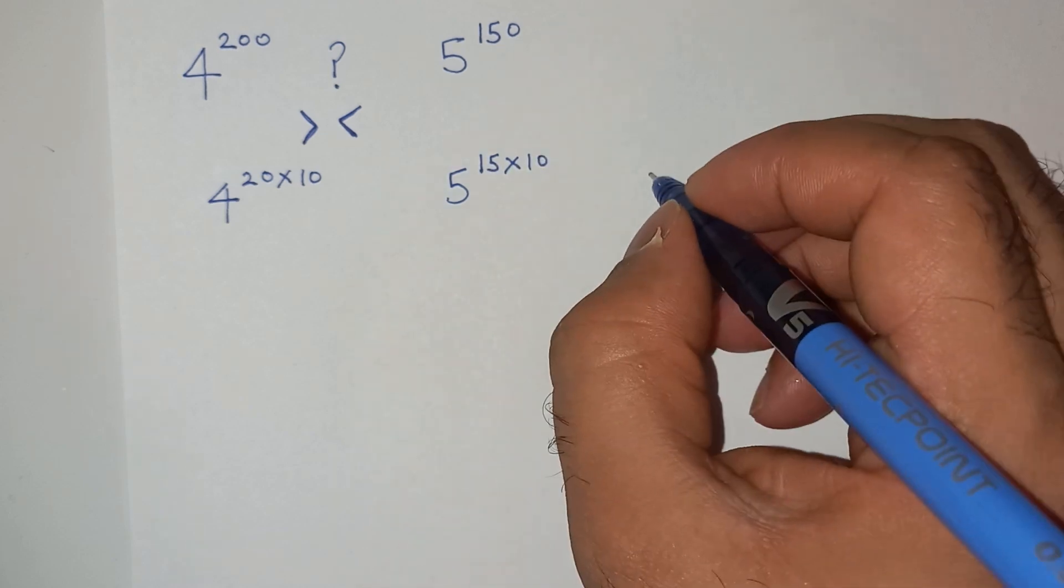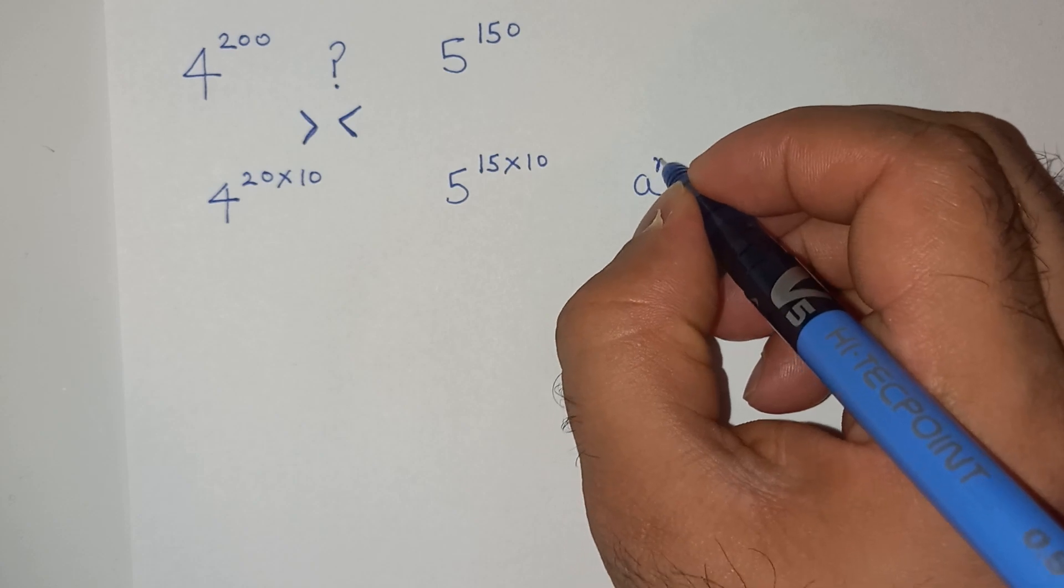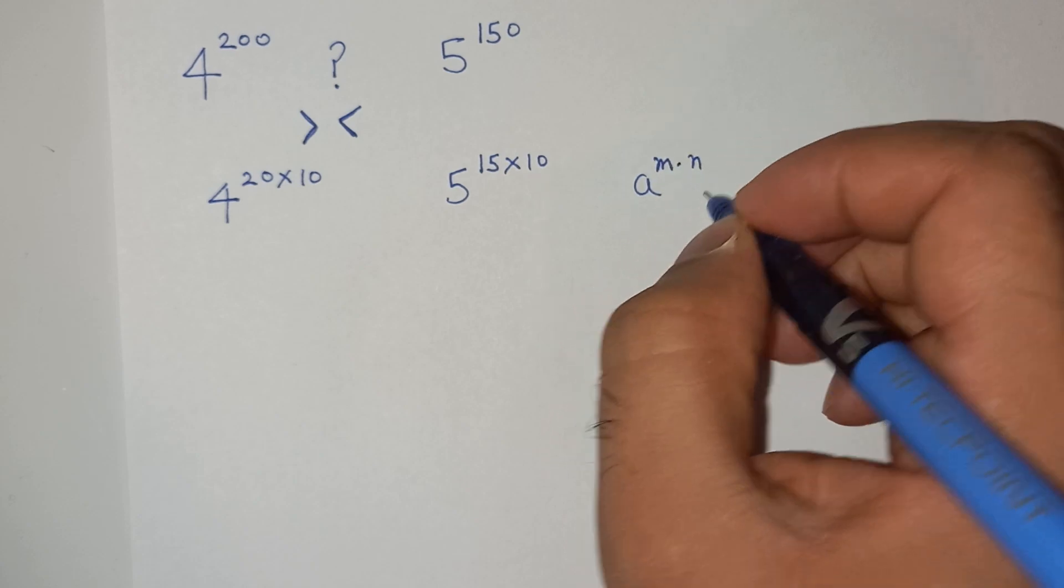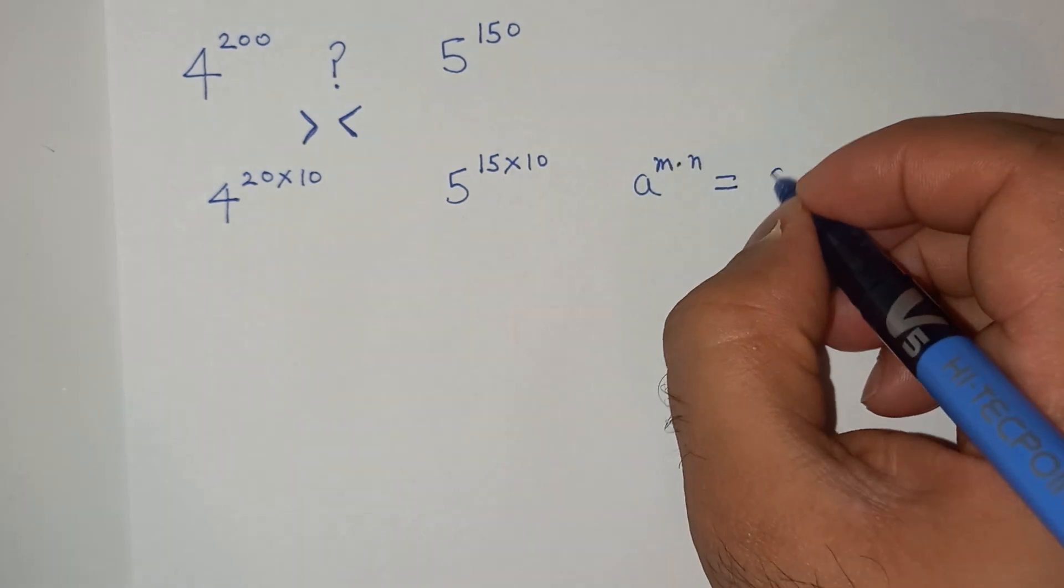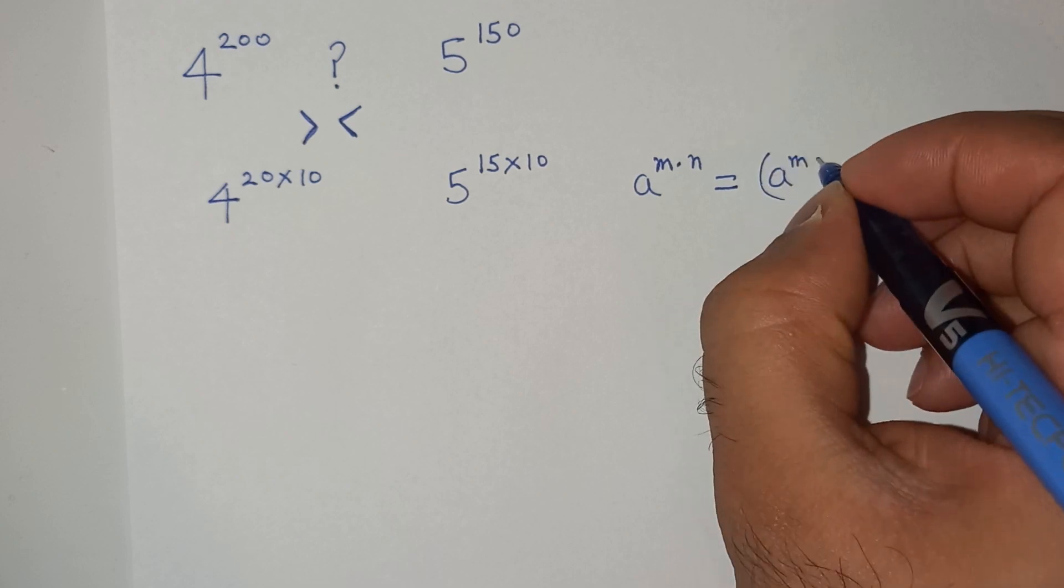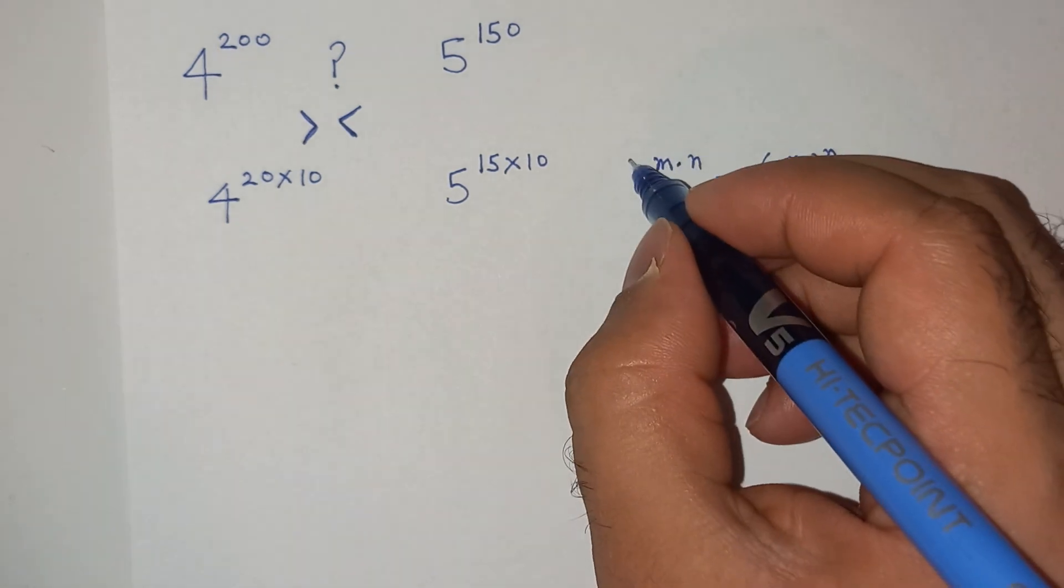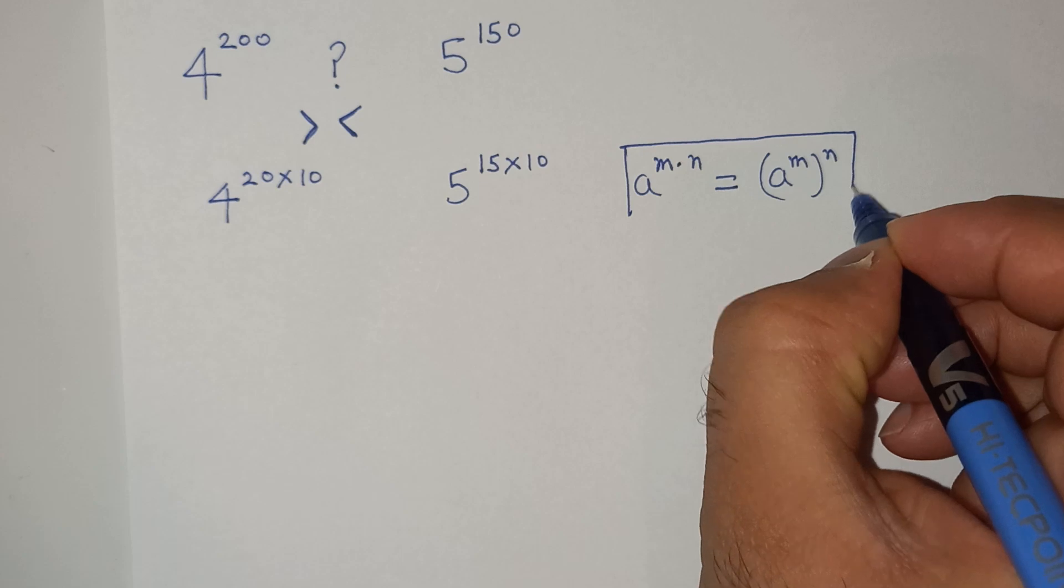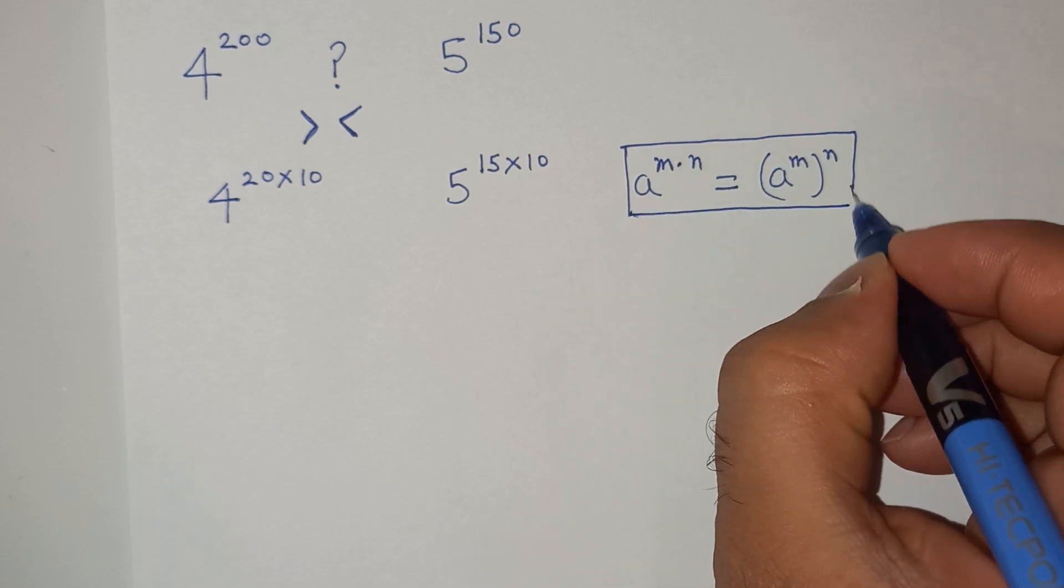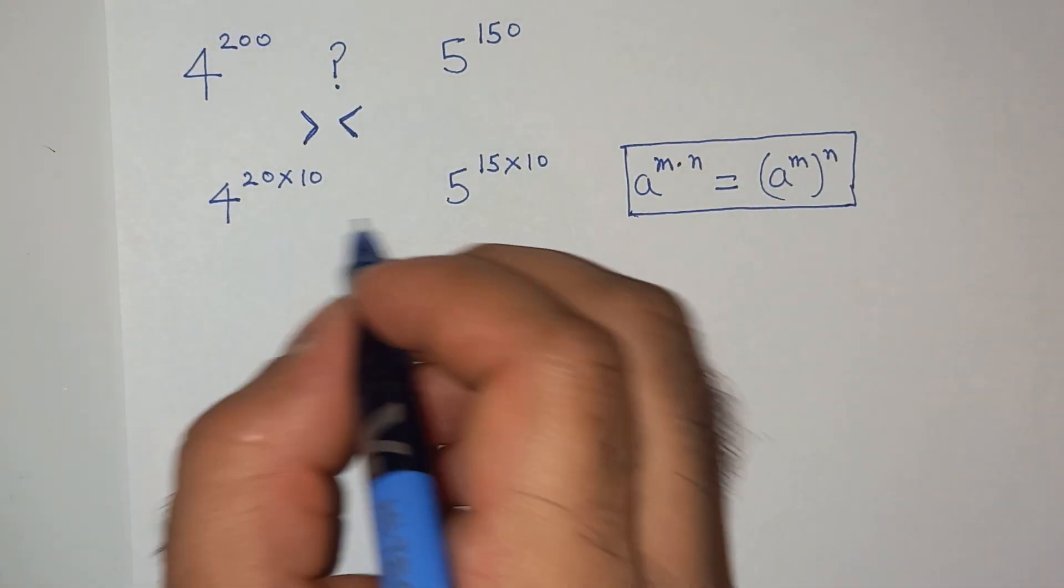Now you know this exponential rule which is a power m power n can be written as a power m bracket power n. So we will apply the same exponential rule over here for both these terms.